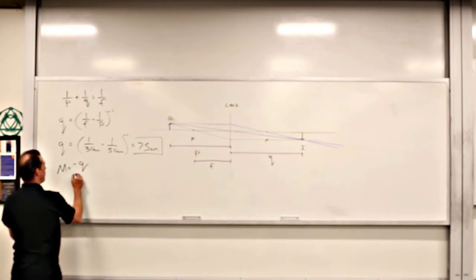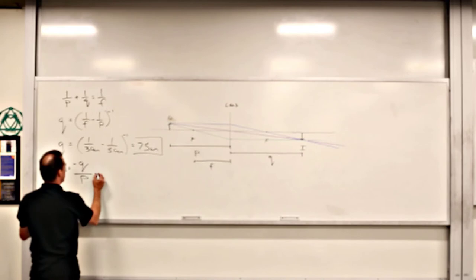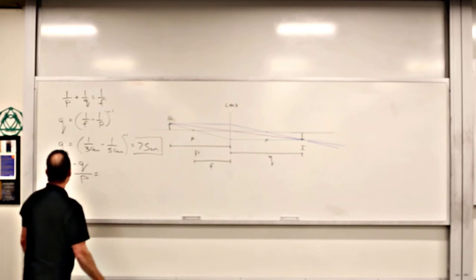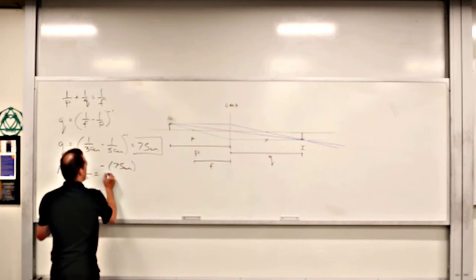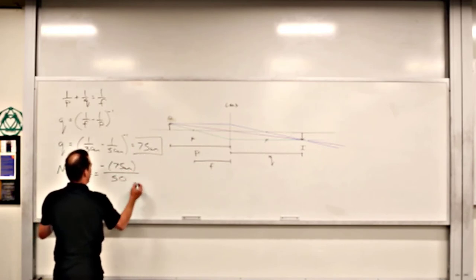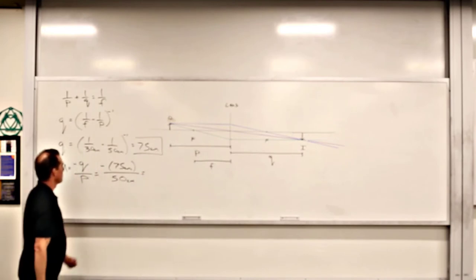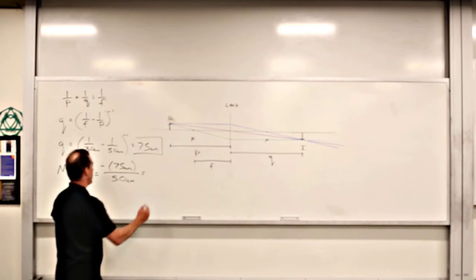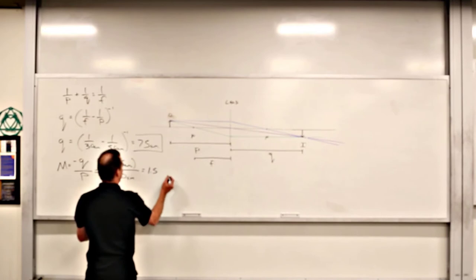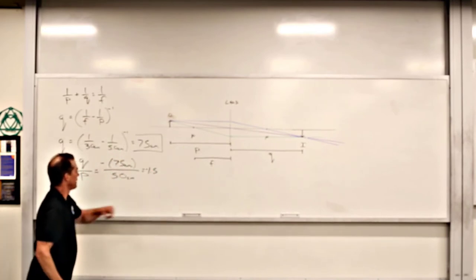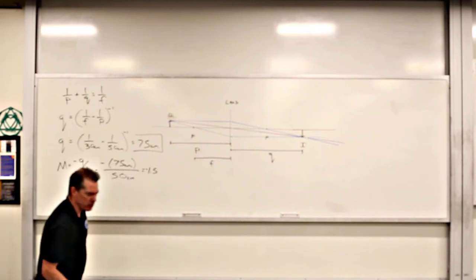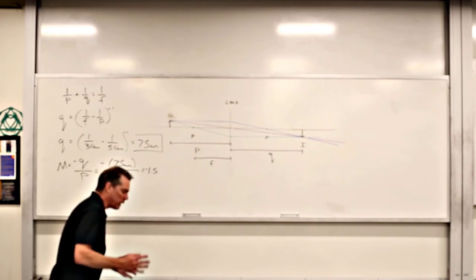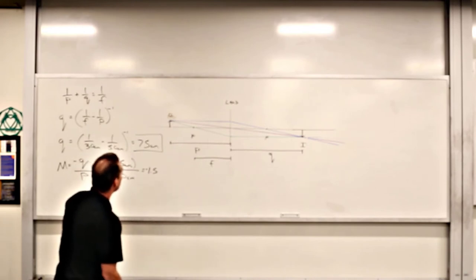Now let's look at the magnification. We need M = −Q/P, which is −75 cm divided by 50 cm. That gives us negative 1.5 — the negative sign telling us that it's inverted, and it's 1.5 times the size of the object. The ray diagram doesn't perfectly show that, but these ray diagrams don't always work out completely when you have large angles.